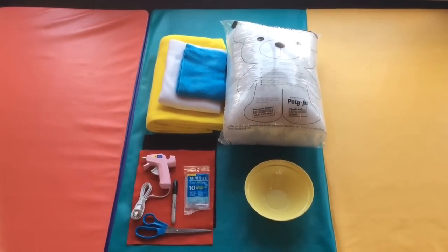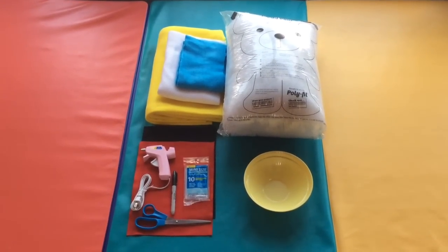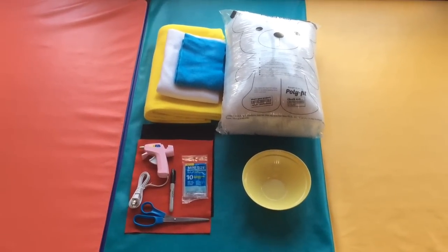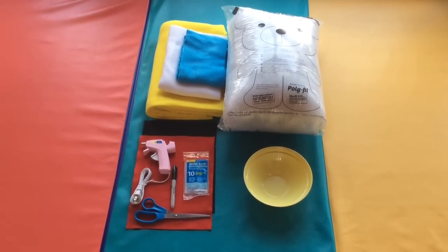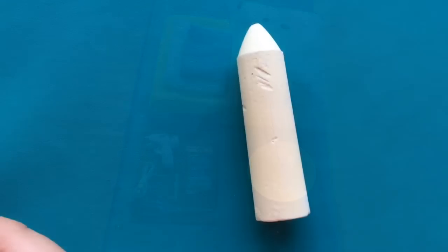You'll need a circular object, polyfill, fabric, hot glue gun, Sharpie, and some scissors. The fabric you should have is the color that you want your emojis. You also need chalk.